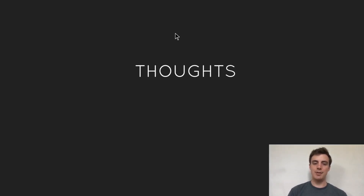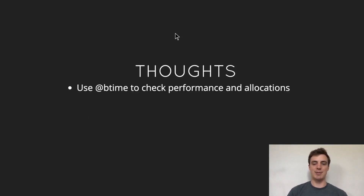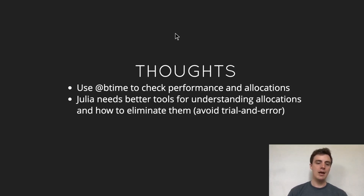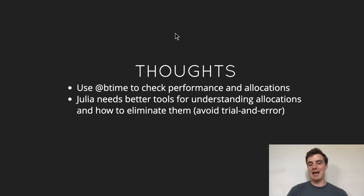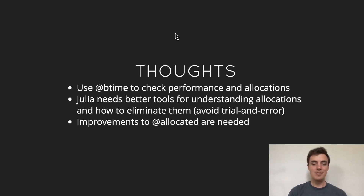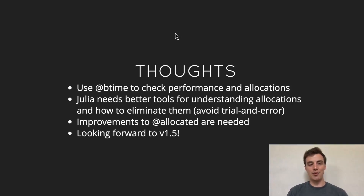For final thoughts: in practice, I used @btime from BenchmarkTools to check performance and allocations throughout, going piece by piece and making sure new code didn't allocate. At a high level, I think Julia really needs better tools for understanding allocations and how to eliminate them — I can't count how many times I wanted to give up and go back to C++, because I found things that worked but couldn't always explain why. There are also improvements needed in @allocated, whose results don't always match @btime. I'm looking forward to the allocation-centered improvements in version 1.5 and beyond, and happy to discuss how to improve performance and eliminate allocations in time-critical code.